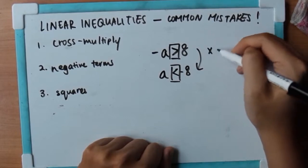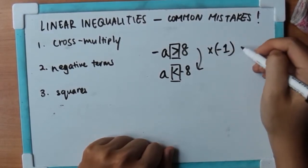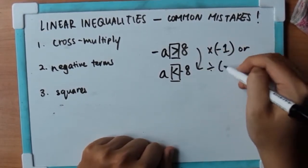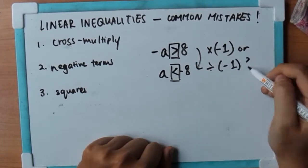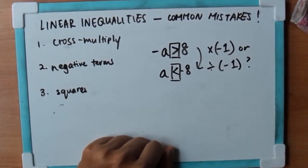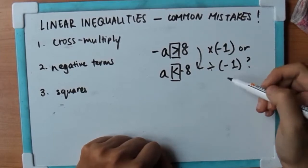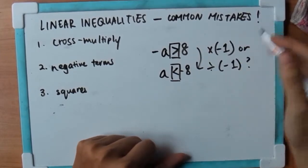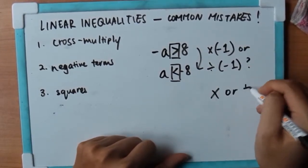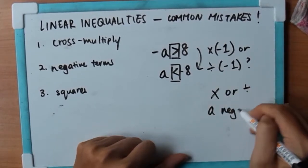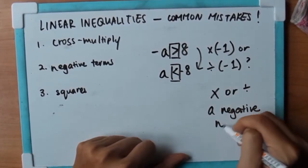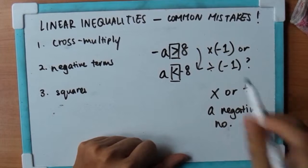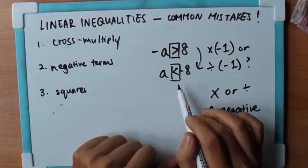Do you multiply by negative 1 or divide by negative 1? Not just 1, it can be negative 10, negative 100. As long as you multiply or divide a negative number, you have to change your inequality.